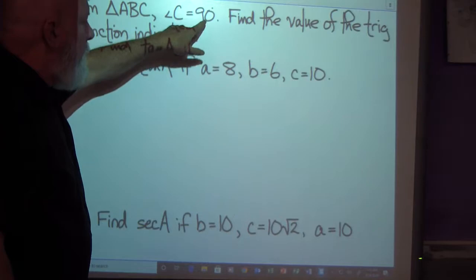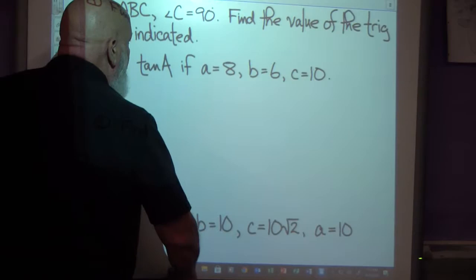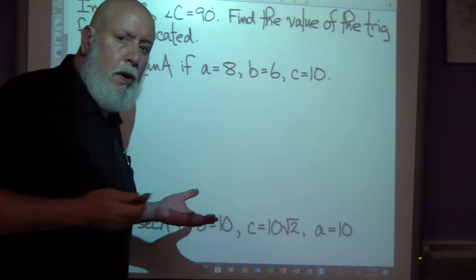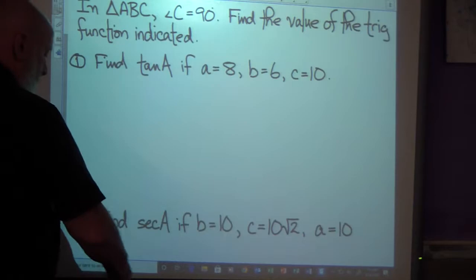In triangle ABC angle C is 90 degrees so we have a right triangle. Angle C is the right angle and side C will be the hypotenuse. Find the value of the trig function indicated. Again, when I'm just given information and I'm not given a figure, I'm going to draw my own figure and I'm not going to really pay any attention to whether it's to scale or not. I'm just going to give myself a place to label everything and then find what it is I'm looking for. So here we go.